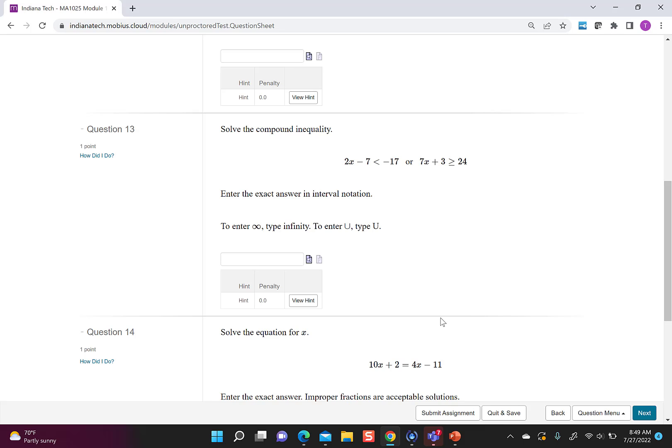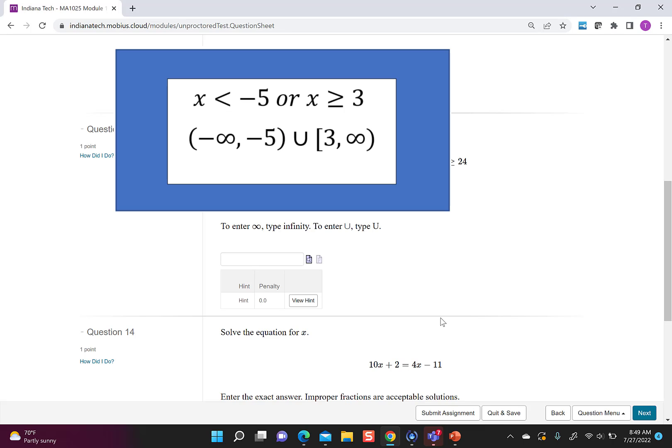So I worked on number 13 ahead of time, and it turns out the answer is x is less than negative 5 or x is greater than or equal to 3, which means I'm going from negative infinity to negative 5, and then I have that union with 3 to infinity, and that 3 is going to be included.